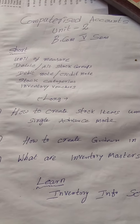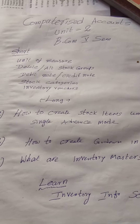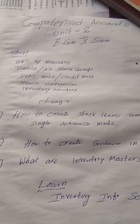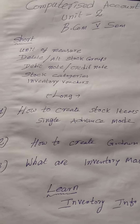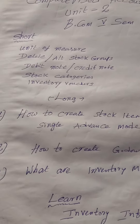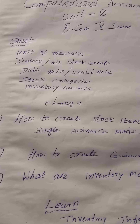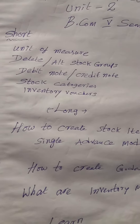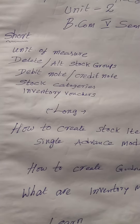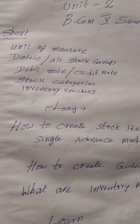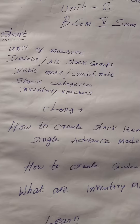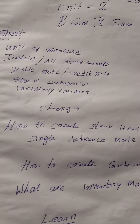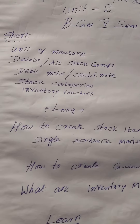Unit number two: computer icons, important for short unit of measure — this is expected. Types of unit of measure, delete old stock groups and stock items, debit note and credit note, stock categories.